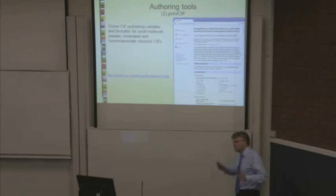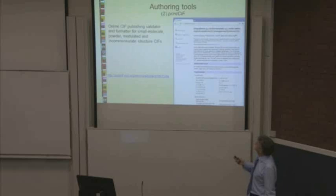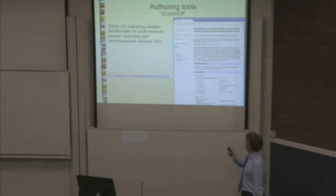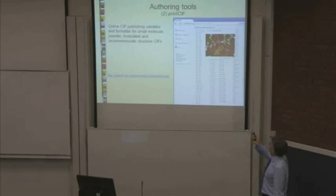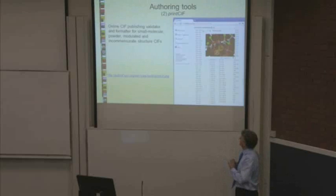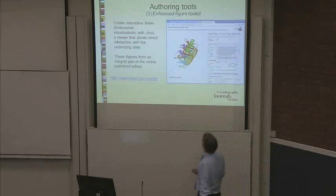On the web we also have PrintCIF, which allows you to have a PDF version of the paper as it would appear in the final journal — again, upload the CIF. But it allows you to do more than just have a preprint. You can highlight a bond in the bond table and it'll fire up JMol, and you can investigate further. You can also do that within the text of the article — highlight a bond within the text, it'll find it, fire up JMol, and you look at it further.